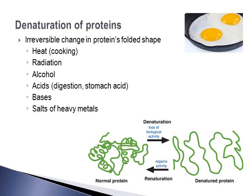Denaturation can also occur by radiation, alcohol, acids, bases, and salts of heavy metals. With acids, this would also occur in the body through digestion. Stomach acid is very acidic, and it works to denature protein so that enzymes can then work for digestion of proteins.